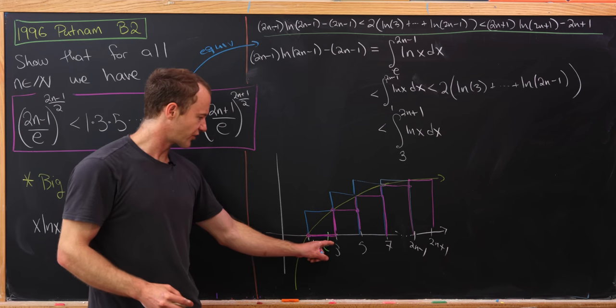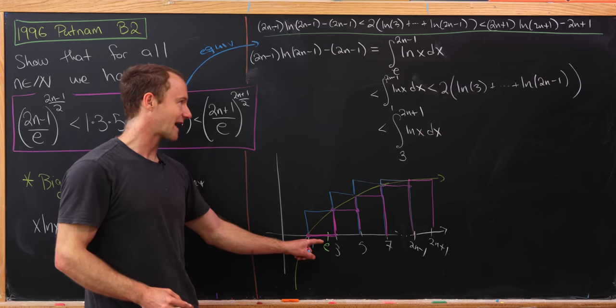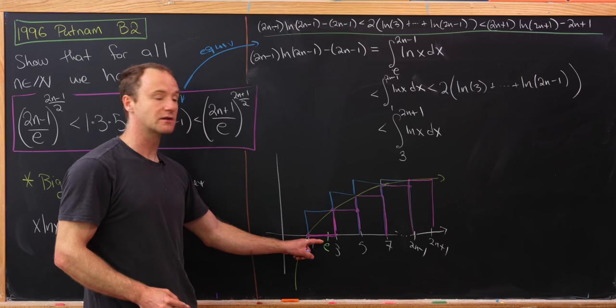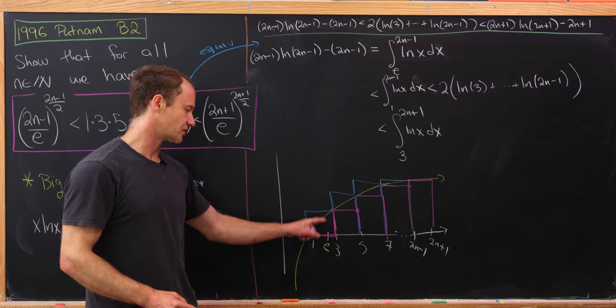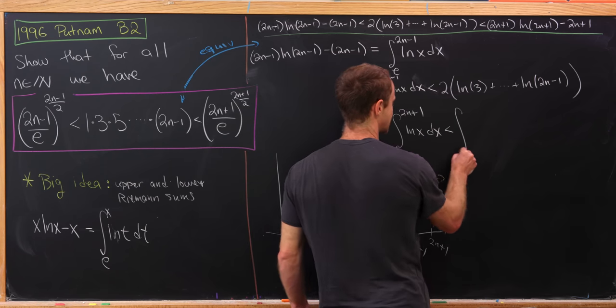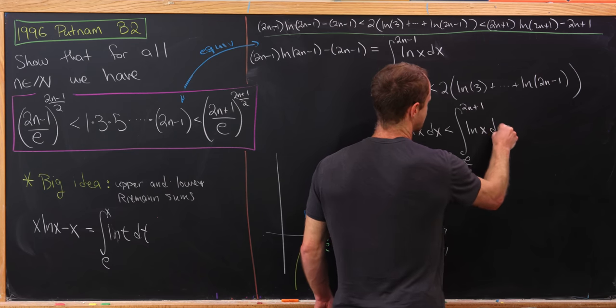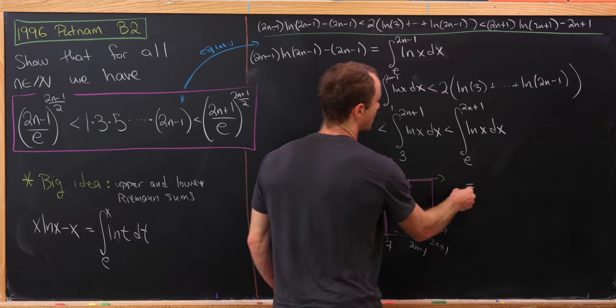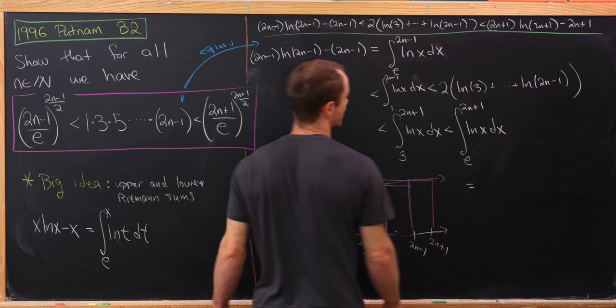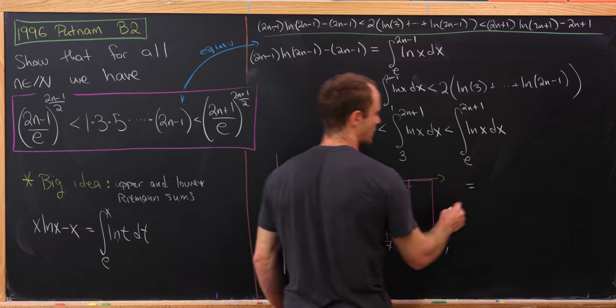Oh, but now since 3 is bigger than e, if we move this back to e, we get something larger. Because the natural log is positive between e and 3. So let's do that. So this is going to be less than the integral from e to 2n plus 1 of the natural log of x dx. But in turn, by this formula over here, that's exactly equal to the right-hand part of our inequality.